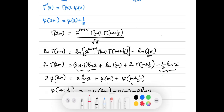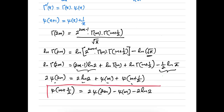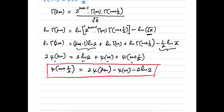This is the duplication formula of the digamma function. If we apply m = 1 here, we have ψ(3/2) = 2·ψ(2) - ψ(1) - 2·ln 2. So if we know ψ(2) and ψ(1), we can find the value of ψ(3/2). We can do it later.